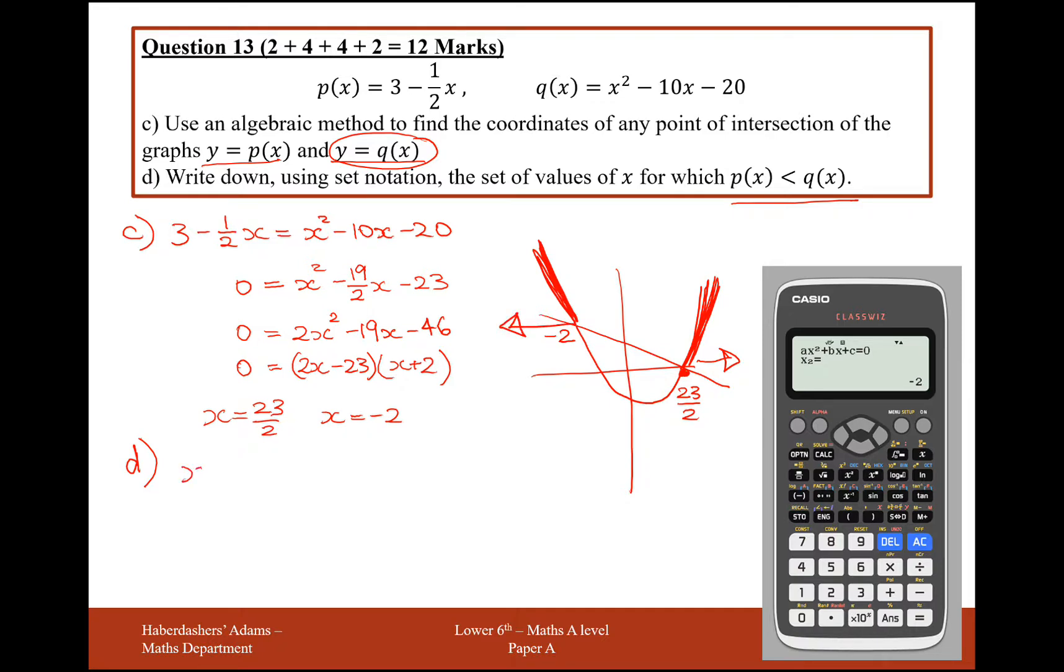So what we want is for the x coordinates to be less than minus 2 or for them to be greater than 23 over 2. But it says write this in set notation. So we're going to have to use those awkward squiggly brackets to help write this answer. So what this is going to be is it's going to be squiggly bracket x such that x exists in the real set of numbers. And it's an or, so the symbol for that is a u shape, a union shape. And it's the same thing, x such that x exists in the real set of numbers and it is greater than 23 over 2.